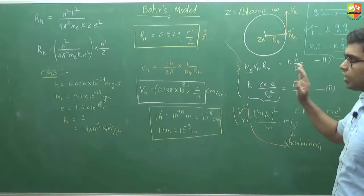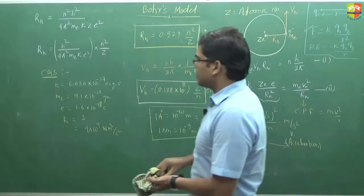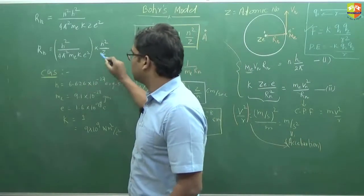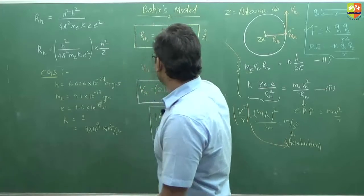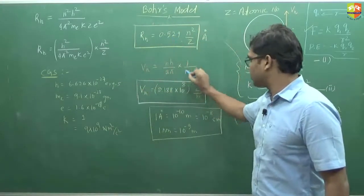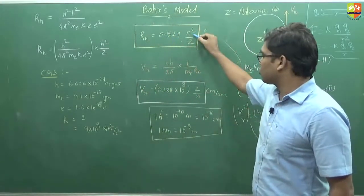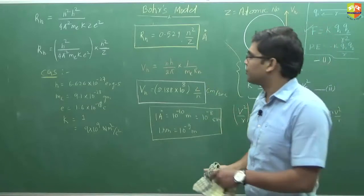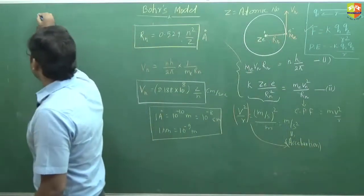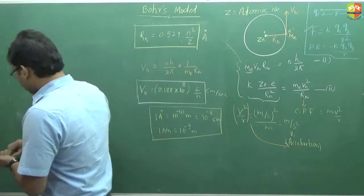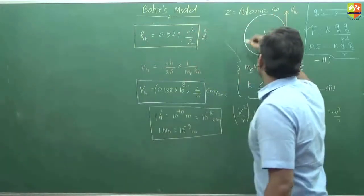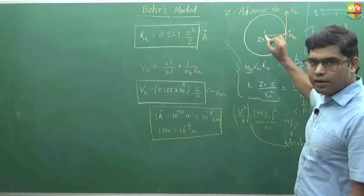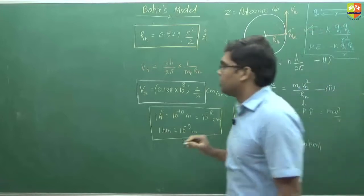So far we have discussed about the radius and velocity of an electron present in the nth orbit. This formula is not that much important — hardly you will get questions on it — but this relation you should know. The constants n²/z and z/n are important. Now we are going to calculate the kinetic energy and potential energy, since the electron is moving in the nth orbit.